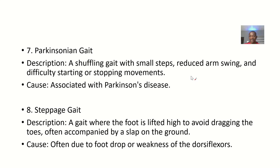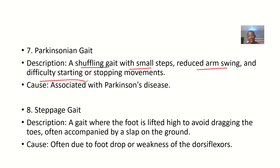Parkinson's gait is also known as a shuffling gait. In shuffling gait, there are small steps — like the person is going forward and shuffling back, similar to shuffling cards. There's reduced arm swinging and difficulty starting or stopping motion. It is associated with Parkinson's disease.